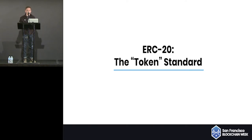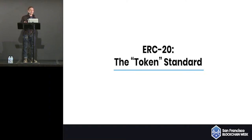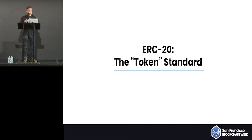ERC-20, the token standard. Early on in the Ethereum community, it became evident that we needed a way to represent fungible digital assets on-chain. In 2015, a developer, Fabian Vogelsteller, proposed ERC-20. It's just six functions and two events, but it could be easily argued that ERC-20 enabled the ICO explosion of 2017. I think that this is the power of standards — when it's something that a developer community can latch onto and use and run with, you see rapid adoption.